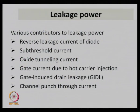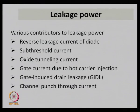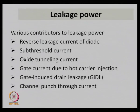Last time we discussed leakage power contributors. The first is the reverse leakage current of the diode at the source or drain junction with the substrate. The second is sub-threshold current — even if VGS is less than VT, we are still in weak inversion, and current still flows between source and drain. This means the device is not fully off — it is still leaking current.